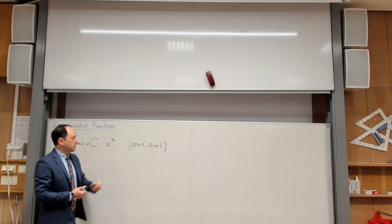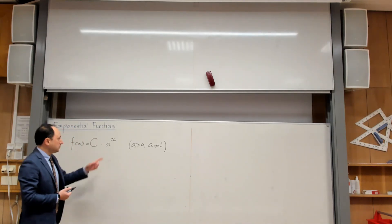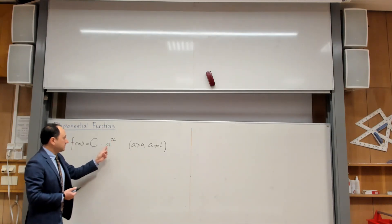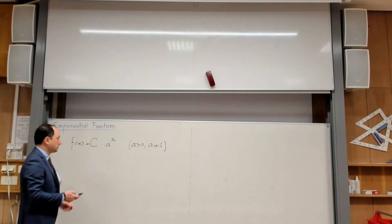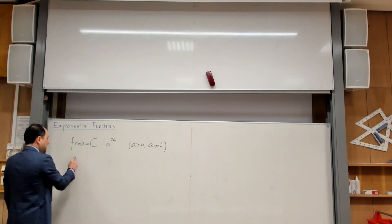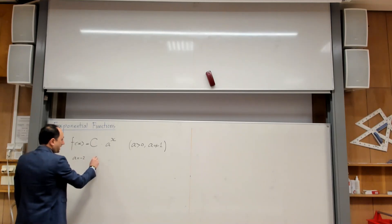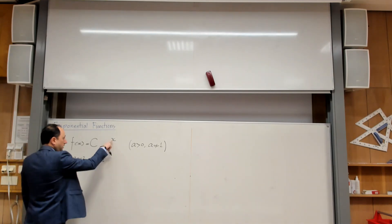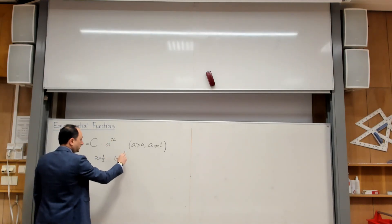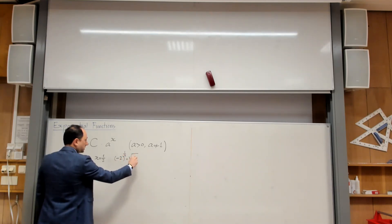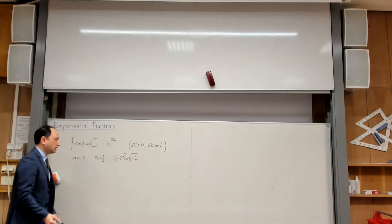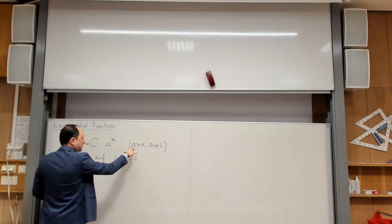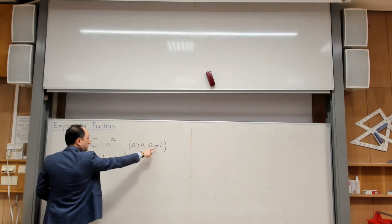The reason I limit myself to positive a's is that if a is negative, then for some x values, a negative number to that power is not defined. For example, if a is negative 2, I'm not allowed to choose x equals one half, because that becomes the square root of minus 2, which is not defined in the realm of real numbers.